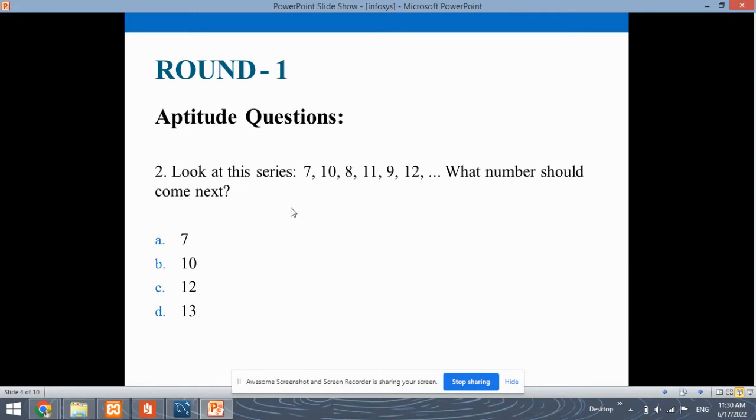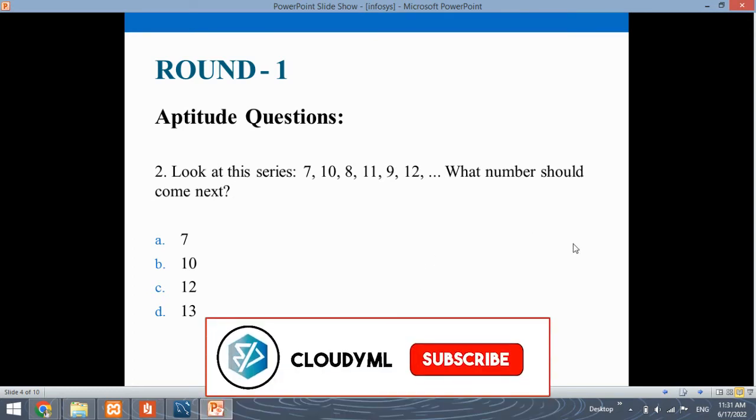Next, the question is of the logical aptitude type, wherein you have been given a series of numbers. Look at the series 7, 10, 8, 11, 9 and 12. What number should come next? You need to predict the next number. You first need to find the pattern. If you watch clearly, you have 7, then after leaving one number, you have 8, after leaving one number, you have 9. Similarly, you have 10, then after leaving one number, you have 11, after leaving one number, you have 12. The number that will come next would be the number after 9, which means 10. Such type of questions will be there in the aptitude.